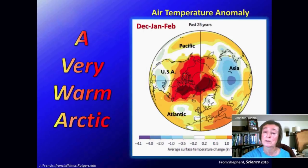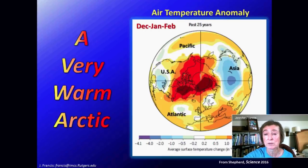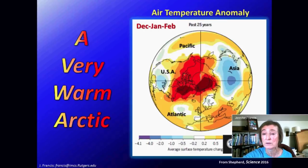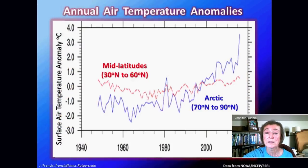We can look at that warming another way — looking down on the Arctic, with the North Pole in the middle. This shows the difference from normal temperatures during the wintertime over the last 25 years, the period where the ice has really been disappearing. It's much much warmer over and surrounding the North Pole over most of the Arctic Ocean. What's very interesting is that we also see cooling happening over the continents — on the right is Asia, where blue colors tell us it's colder than normal, and in the eastern part of North America on the left is also an area of colder than normal temperatures.